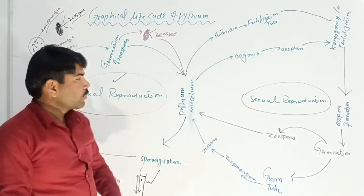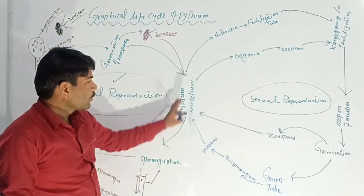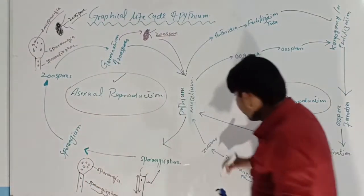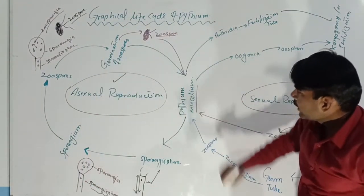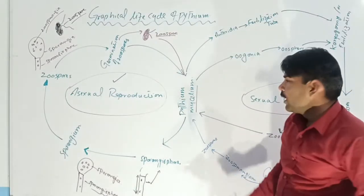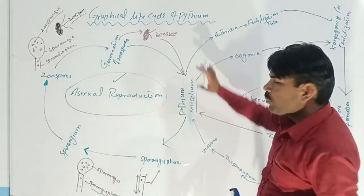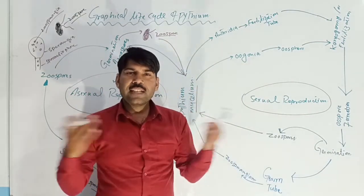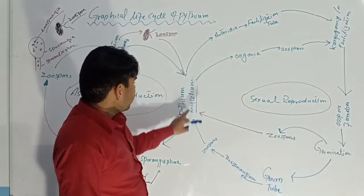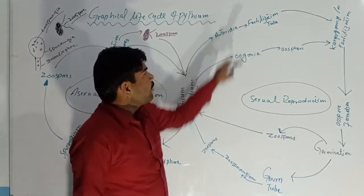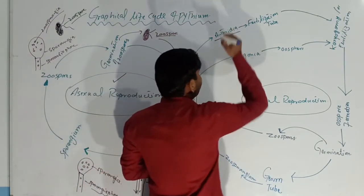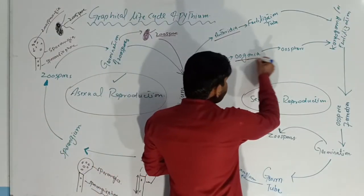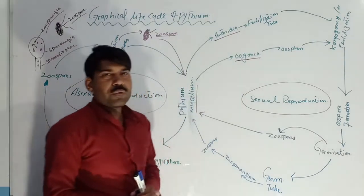That was the asexual reproduction in the life cycle of Pythium. Now we are going to discuss the sexual reproduction. This Pythium mycelium will produce two types of sex organs. Pythium gives rise to the male sex organ known as antheridia and the female sex organ known as oogonia.